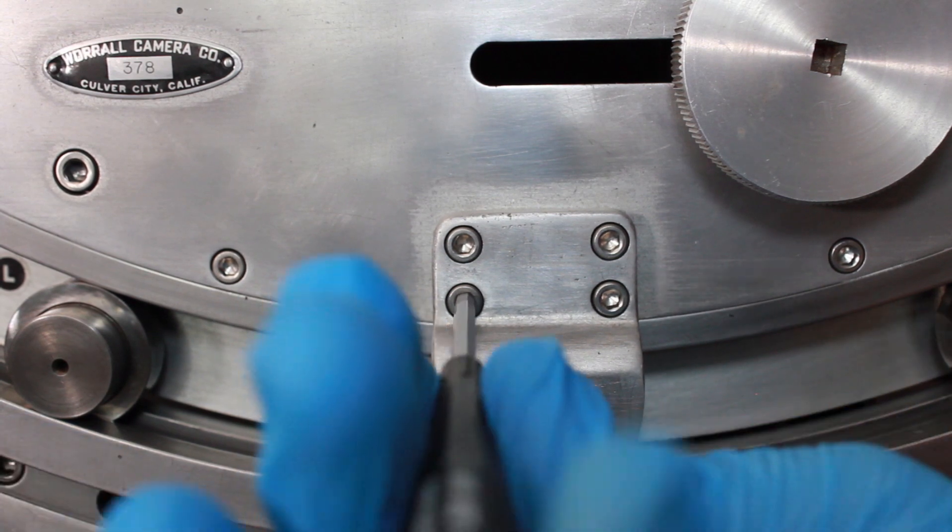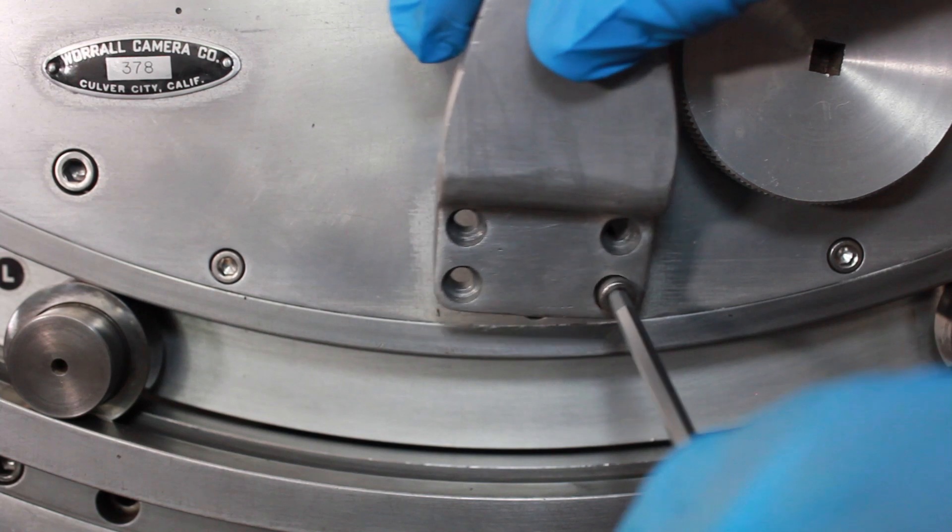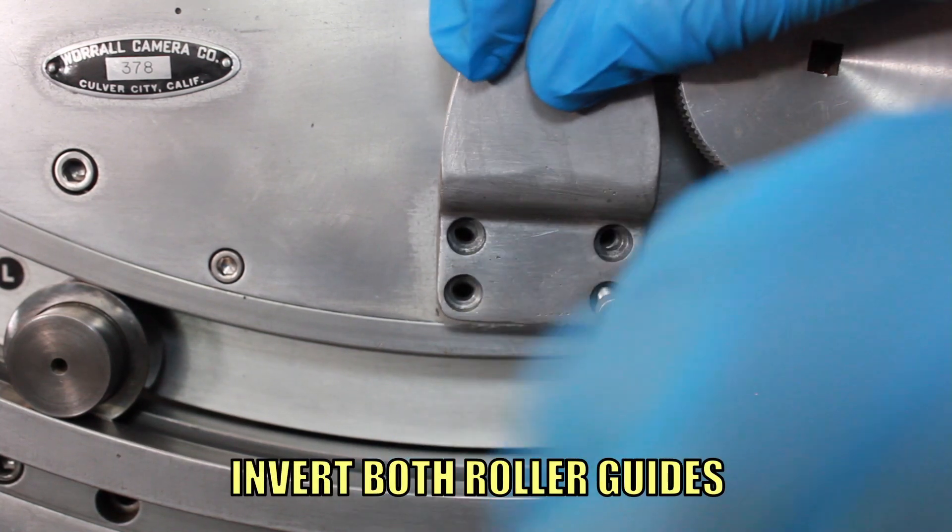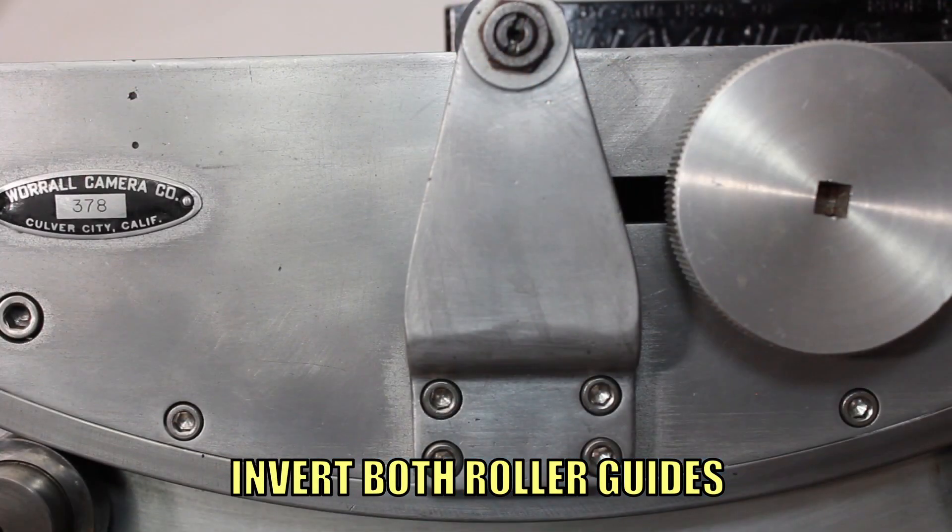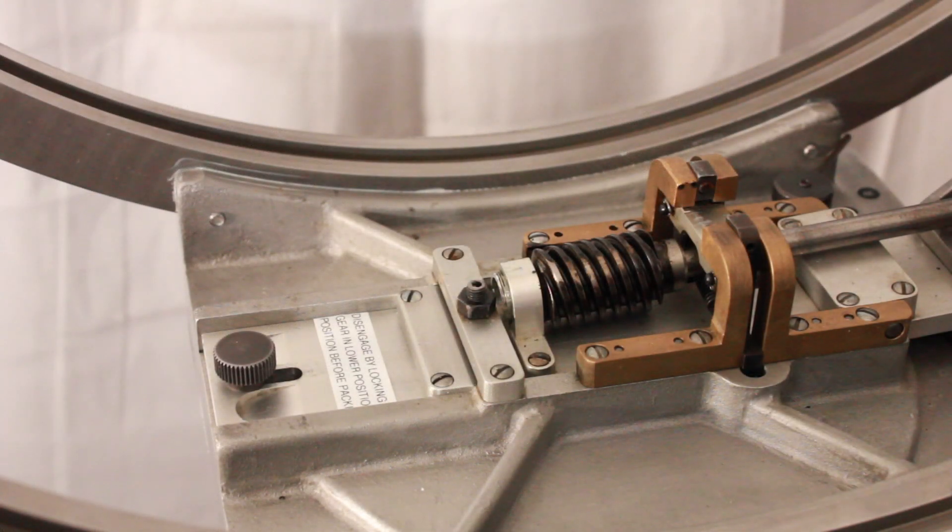Lock pan and tilt brakes. Invert both roller guides. Release tilt brake. Remove tilt gear and rollers.